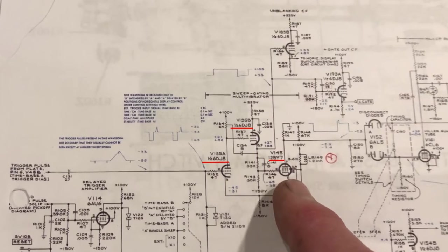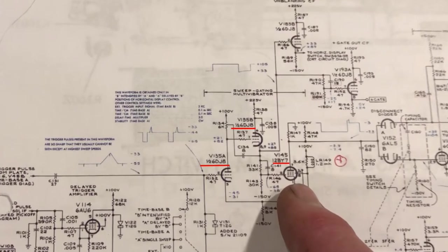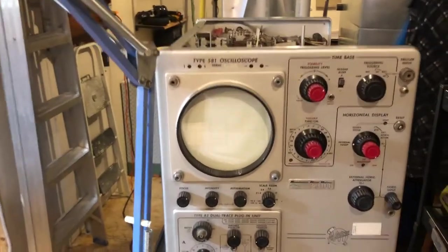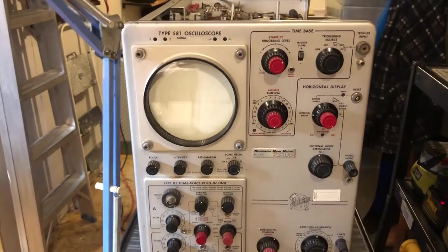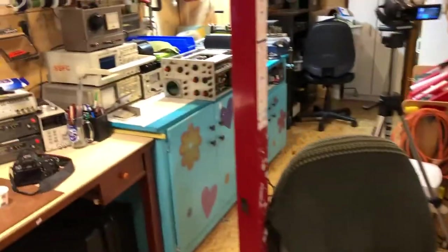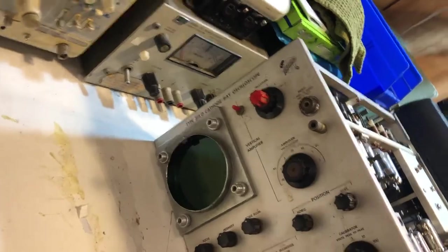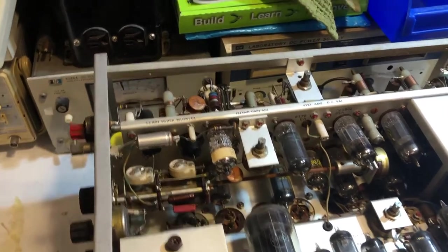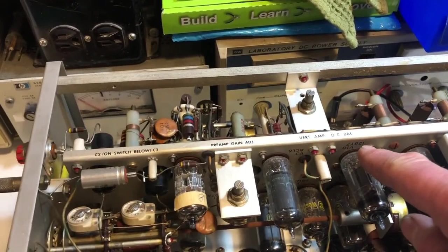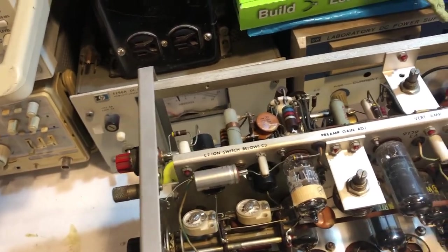I looked to see if I had spare tubes to replace the 6DJ8 and the 12BY7 with. I've got a couple of other old Tektronix scopes — a 581, which I also hope to get going, so I'm not going to steal from it. And then I have a 315, which takes you back to the early 50s. This one unfortunately doesn't have a cathode ray tube, so it's really just a parts machine. It has both a 12BY7 and a 6DJ8 in it.